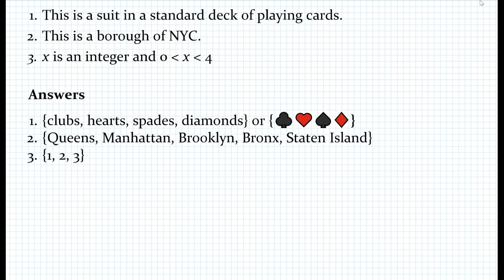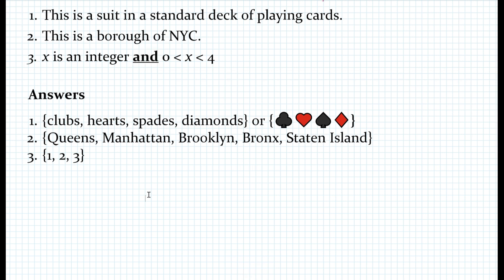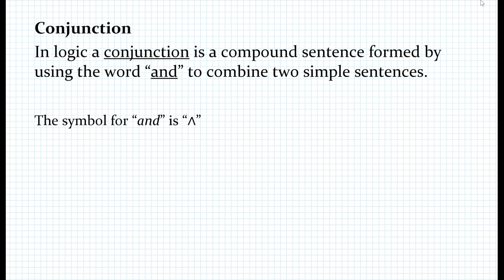What is different in the third problem with respect to problems 1 and 2? The difference is that we have an "and" — let me highlight that. It turns out this is a very important logic operation, and that operation is called conjunction. In logic, a conjunction is a compound sentence formed by using the word "and" to combine two simple sentences. In mathematics, we use symbols, so the symbol for "and" is this caret sign.